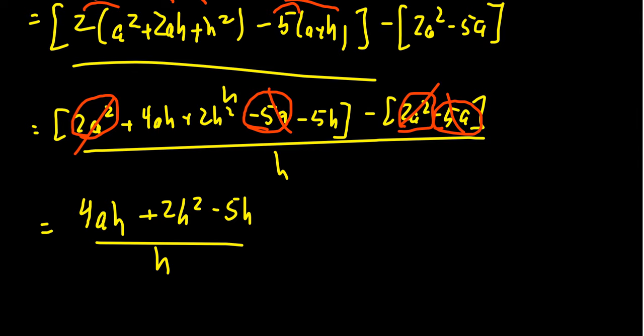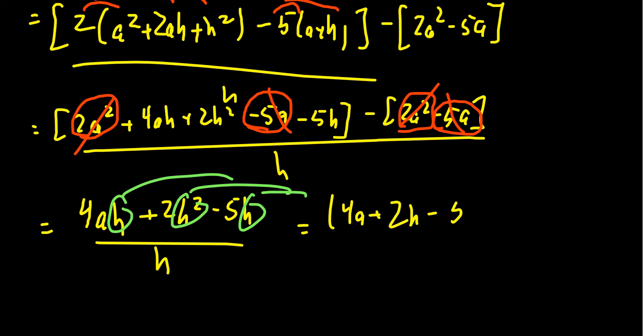But notice actually a happy accident has now occurred. There is a multiple of h for every term in the numerator. If we factor out the h, that will leave behind 4a + 2h - 5, times that by h over h.